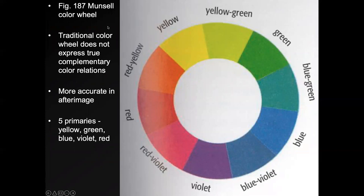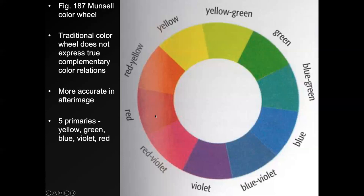The traditional color wheel doesn't really express true complementary color relations, as we can see with the afterimage — the opposites aren't quite what they are on a standard color wheel. The Munsell color wheel was created to fix that. Instead of having three primaries, you have five: yellow, green, blue, violet, and red. If you make images with complementary colors from the Munsell wheel, you would get an afterimage closer to this color wheel than the original one.